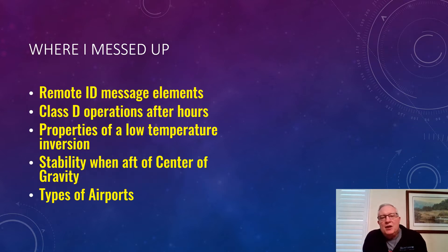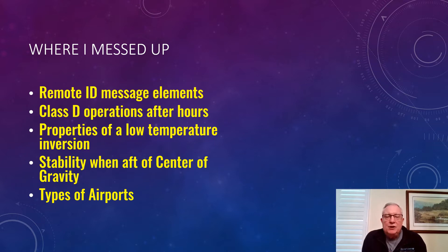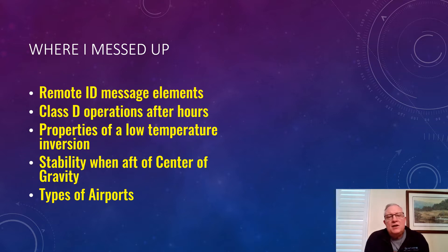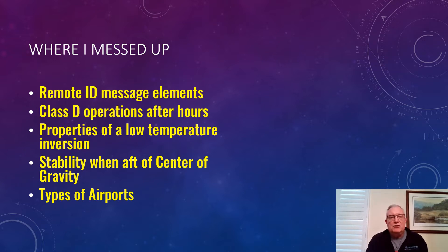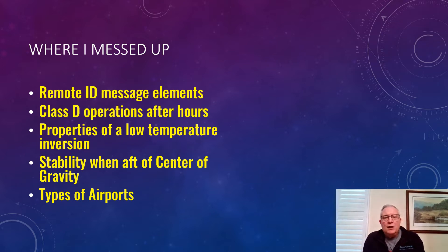The questions I missed: one was about remote ID — the messaging elements and how that's sent out. I'm not quite sure what the specific wording was, but make sure you understand the remote ID regulations and how it operates. I also missed a question on a Class D airport that was closed due to repairs and what that airspace reverted to. Be familiar with those rules. I also missed one on the properties of a low-temperature inversion — I answered unstable air when it should have been stable air, so understand how inversions work.